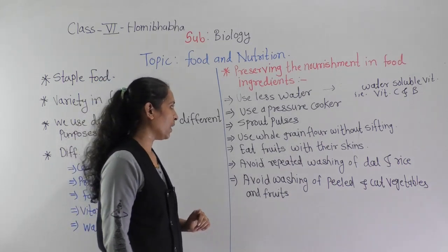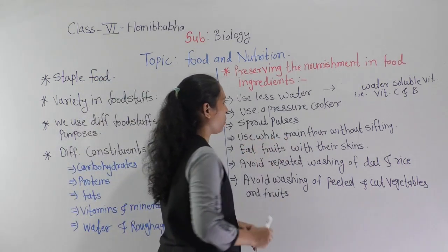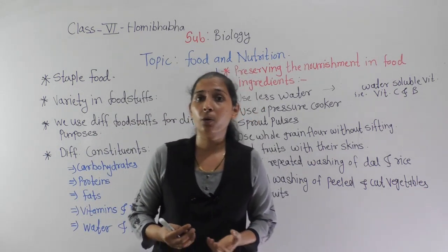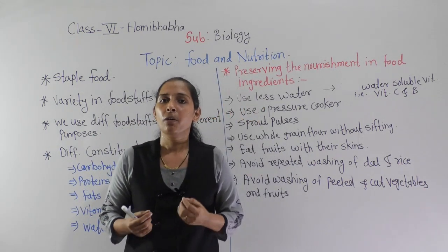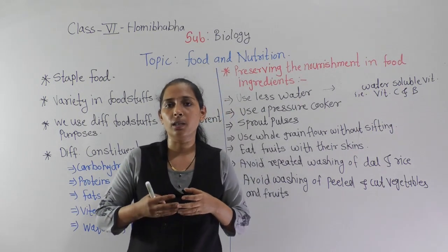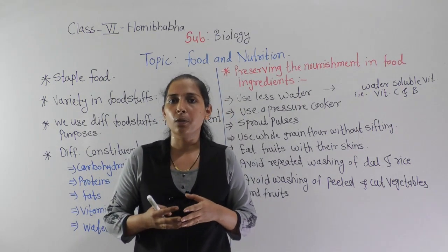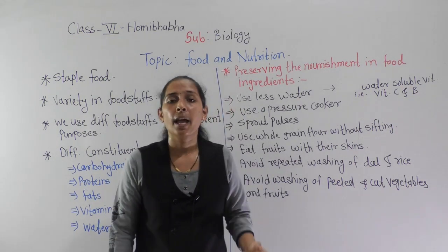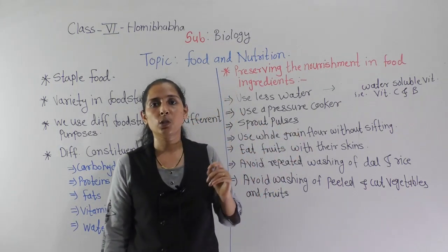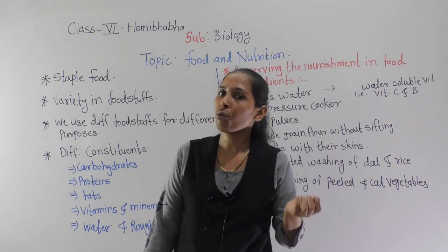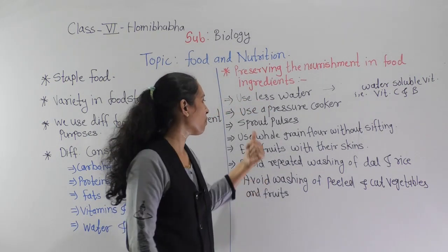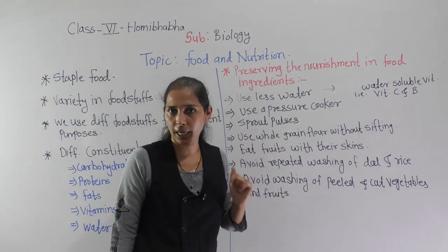Next, sprout pulses. You should sprout the pulses and eat them when the sprouts are still small in size — don't wait for them to grow large. Sprouted pulses are a rich source of vitamins, which is why we should include sprouted pulses in our diet.